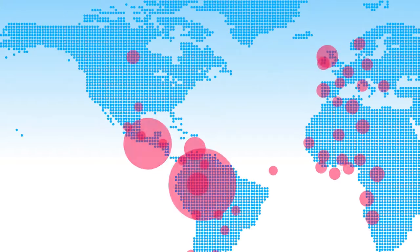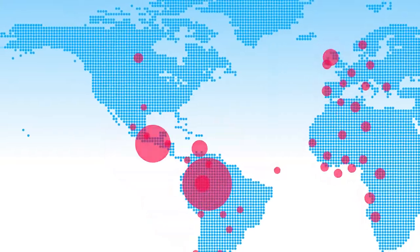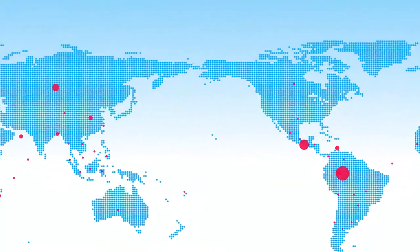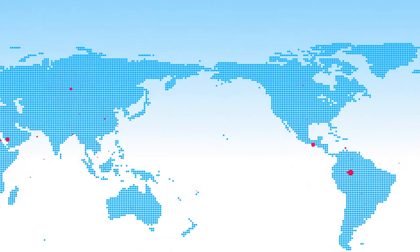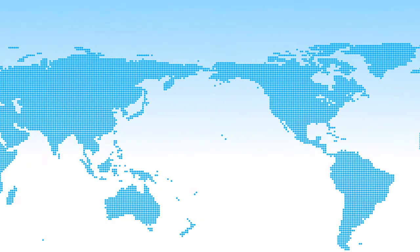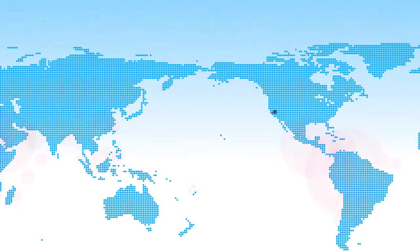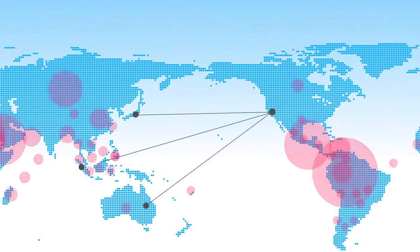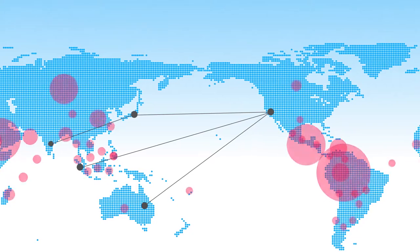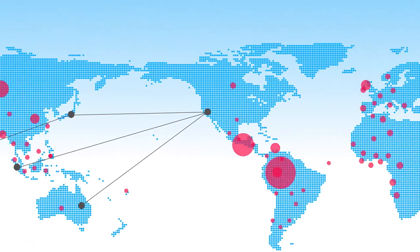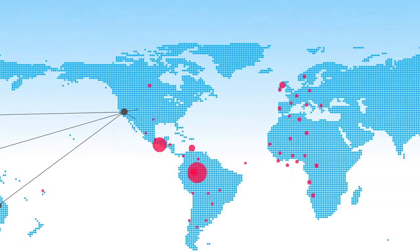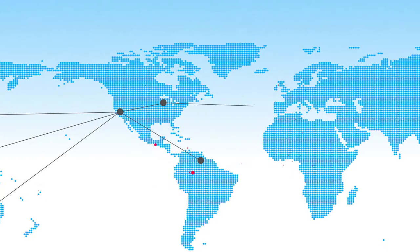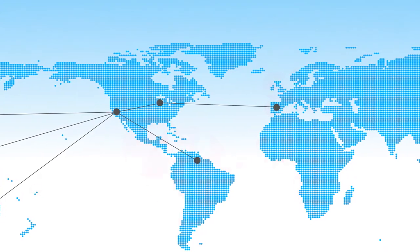Screening for denied parties, sanctions, and embargoes against hundreds of government watch lists from around the world is a necessary part of doing business. But regardless of whether your trade chain process is long or short, simple or complex, involving multiple parties, it's still your legal obligation.